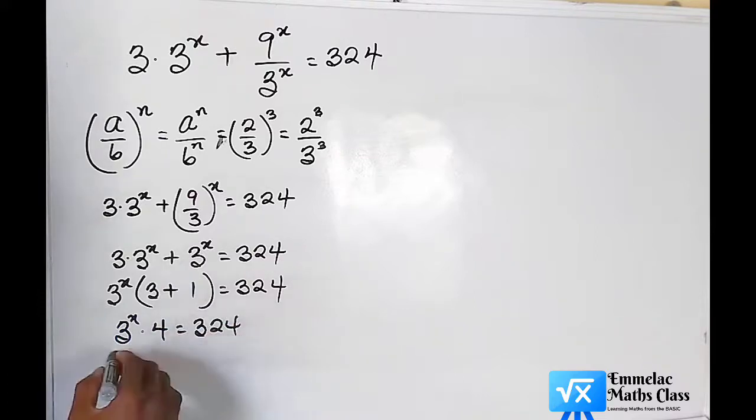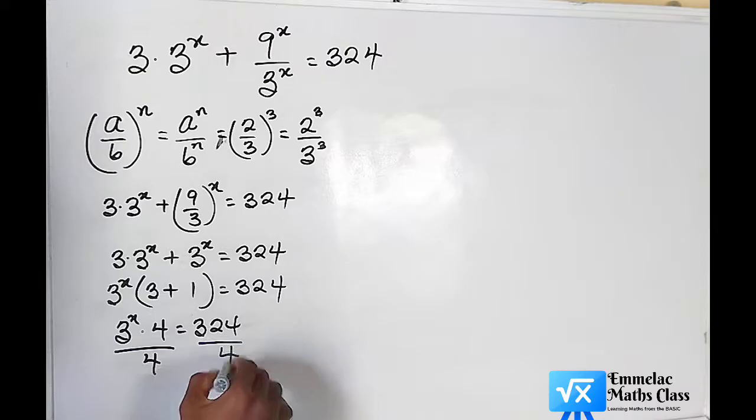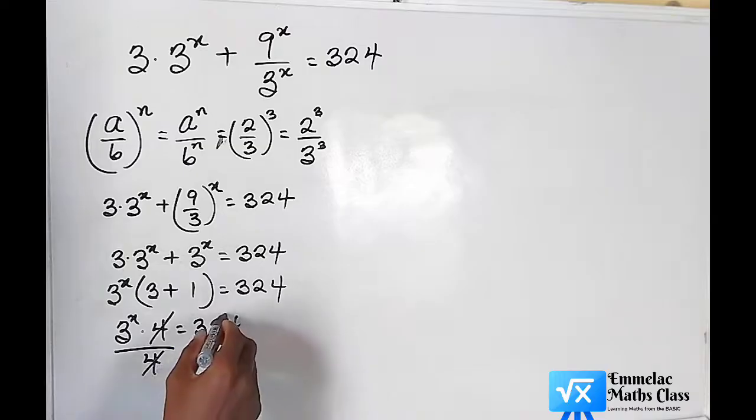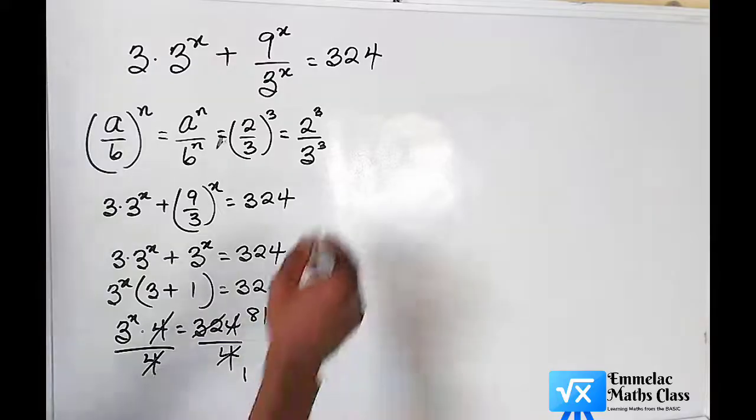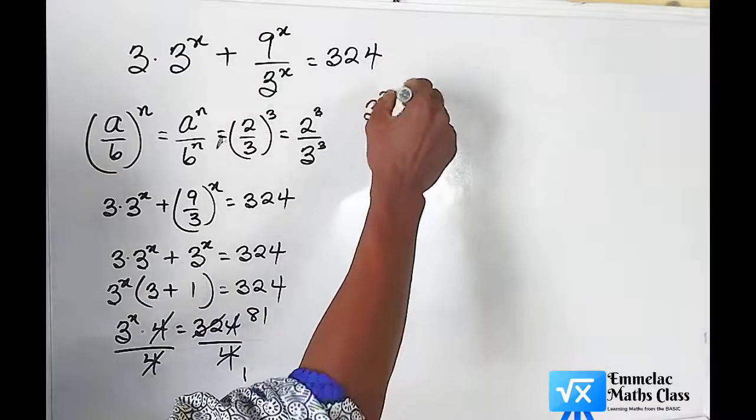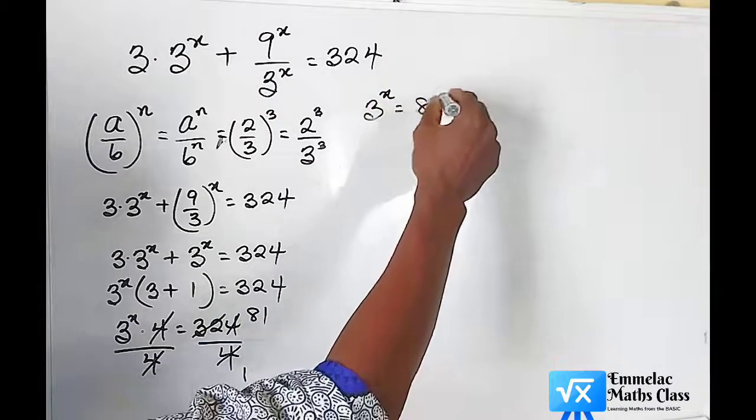We can divide both sides by 4. This 4 here we eliminate. Now 4 in 324 will give us 81, and 4 in 4 will give us 1. Now we are left with 3 raised to the power of x equals 81.